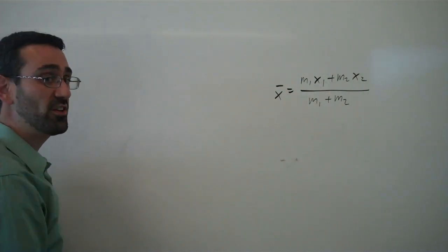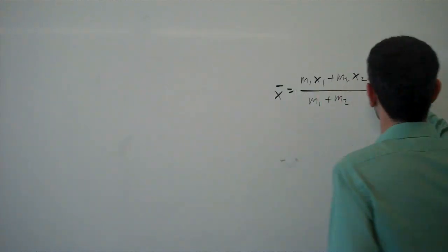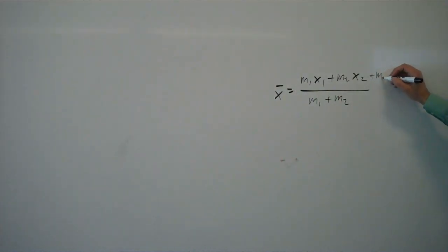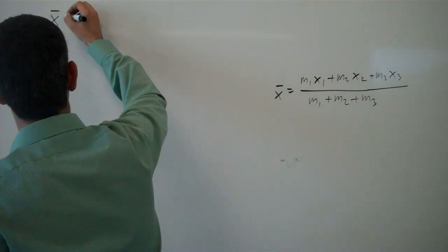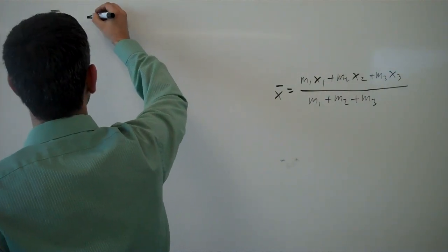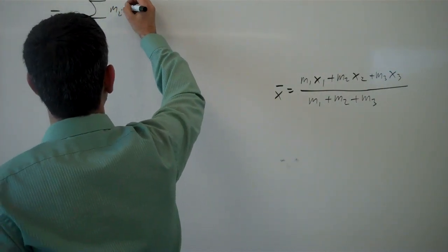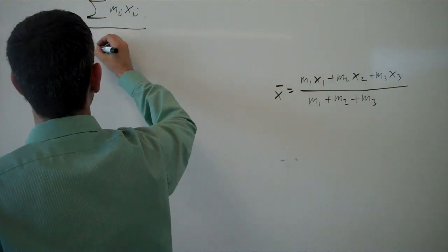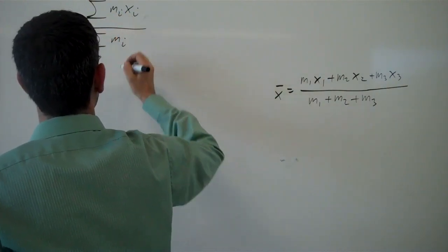In this case, we did it with two masses, but it turns out that that formula can be extended for additional masses. If I had a third mass, I would end up just tacking on an m₃x₃ and an m₃ on the bottom. And in the discrete form, we could write that as the sum of mᵢxᵢ over the sum of the masses.